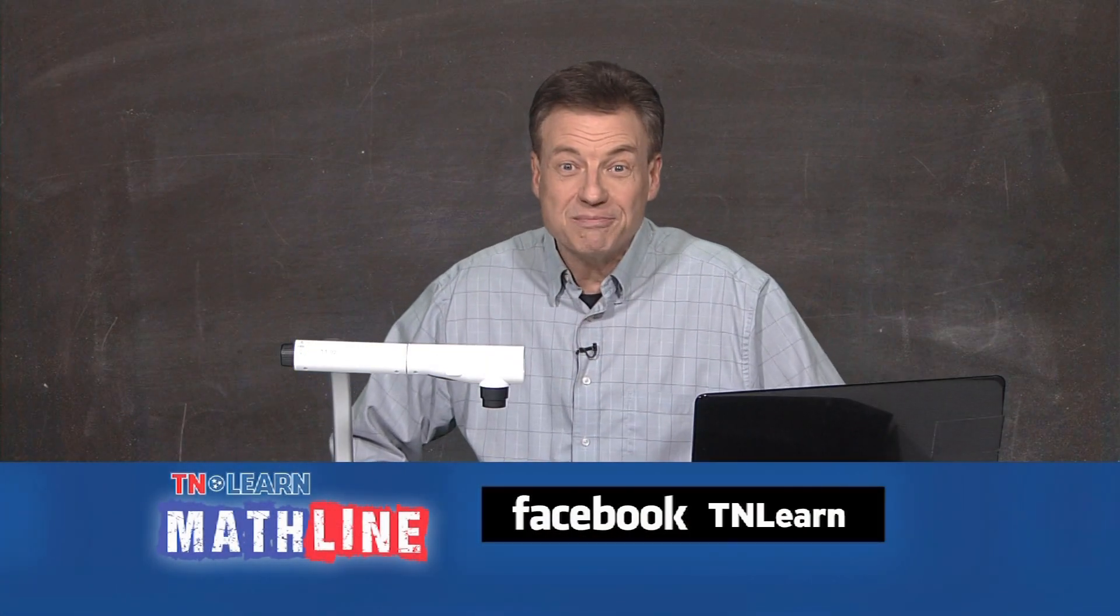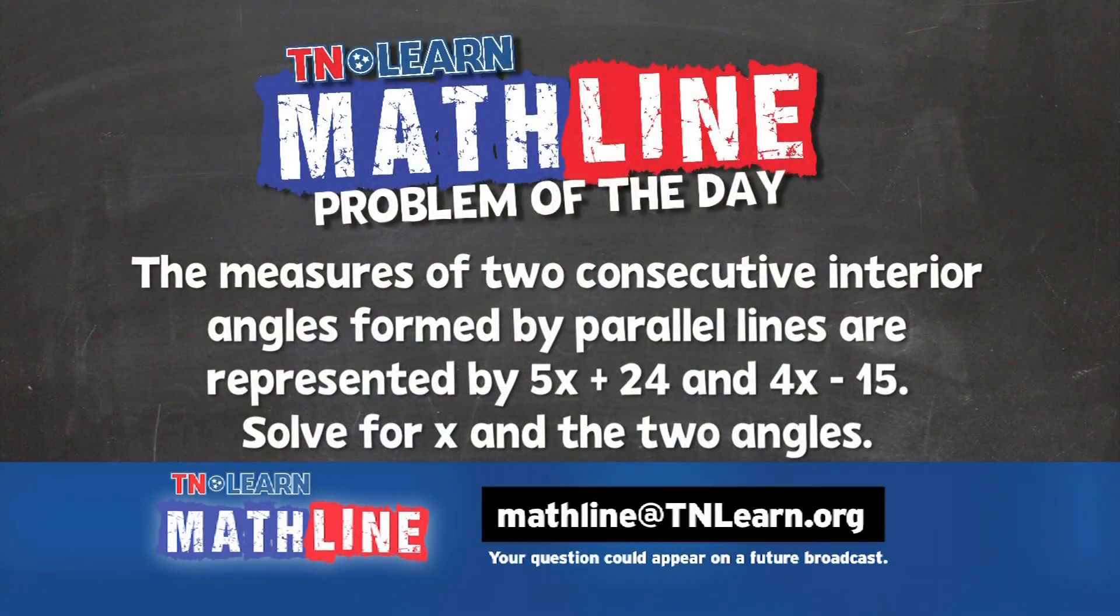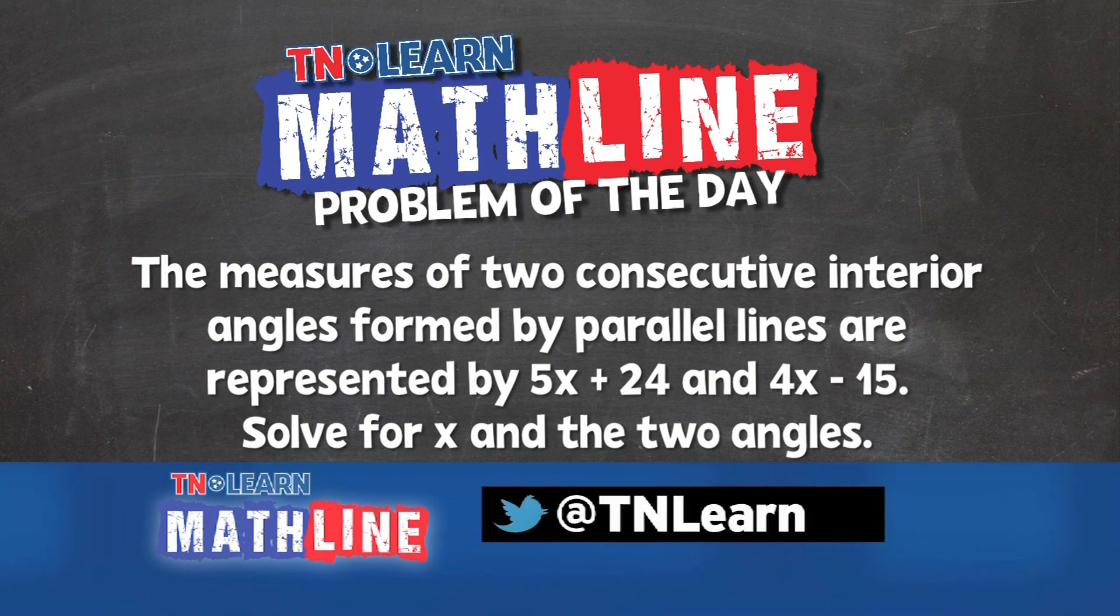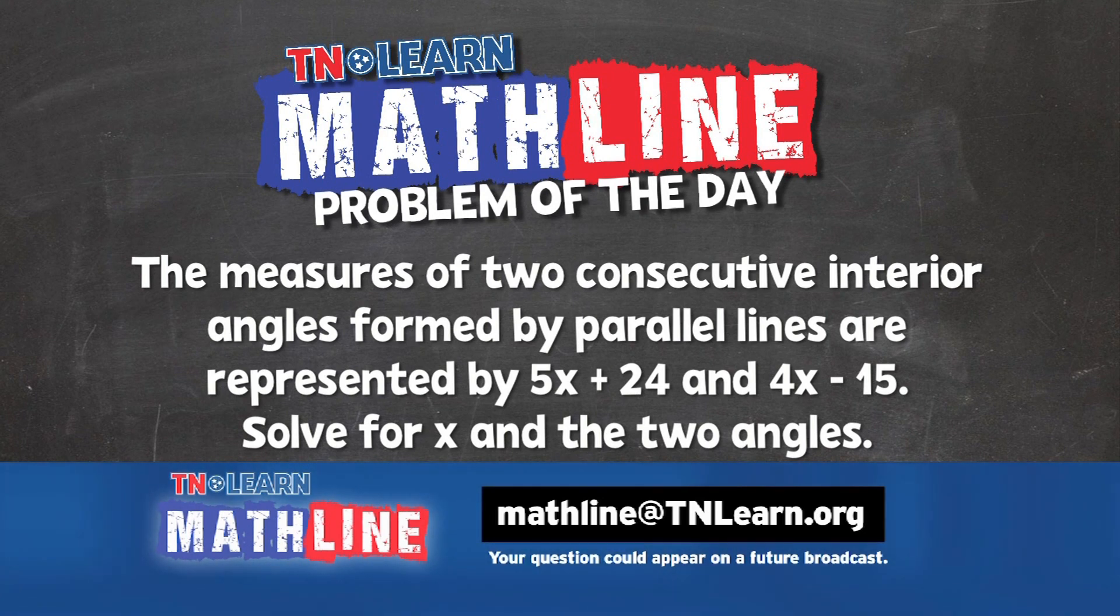Let's take a look at the problem of the day. The measures of two consecutive interior angles formed by parallel lines are represented by 5x + 24 and 4x - 15. We're going to solve for x and the two angles.